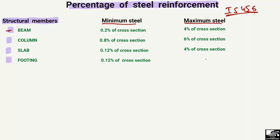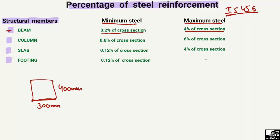Starting with the beam: the minimum steel reinforcement is 0.2% of the cross-section and the maximum is 4% of the cross-section. To illustrate, consider a beam cross-section with a width of 300 mm and a depth of 400 mm.